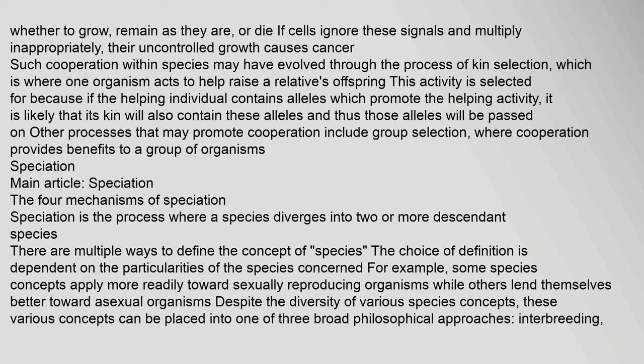Kin selection is selected for because if the helping individual contains alleles which promote the helping activity, it is likely that its kin will also contain these alleles and those alleles will be passed on. Other processes that may promote cooperation include group selection, where cooperation provides benefits to a group of organisms. Speciation: Speciation is the process where a species diverges into two or more descendant species. There are multiple ways to define the concept of species, with the choice of definition dependent on the particularities of the species concerned.